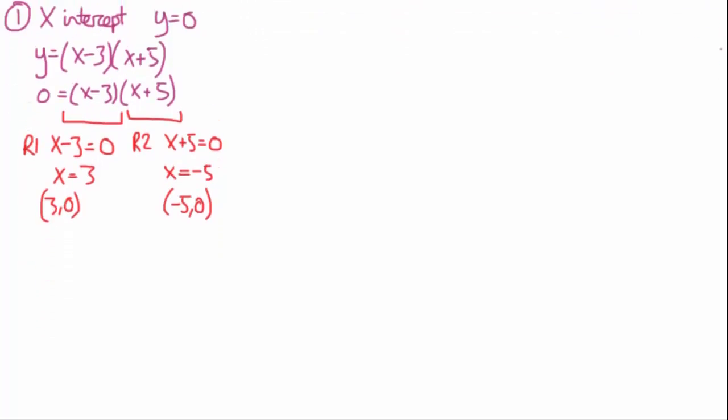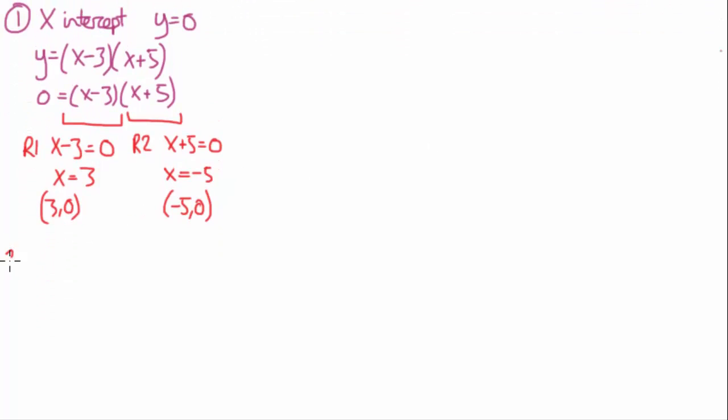Working out the y-intercept, even simpler, so y-intercept, I'll just write that out. The y-intercept is when x is equal to 0. So that's when x equals 0. So we've got the solved equation again, x minus 3, x plus 5.